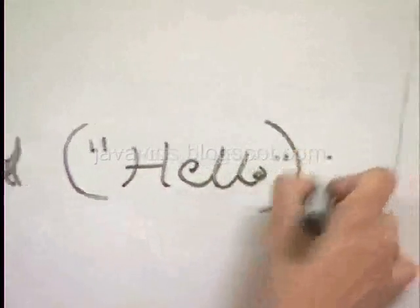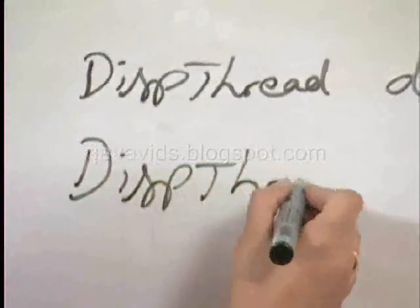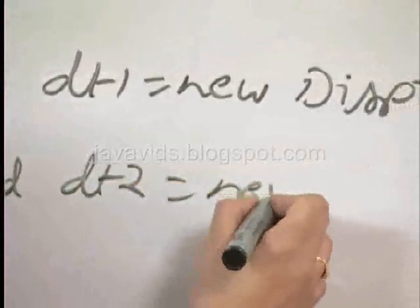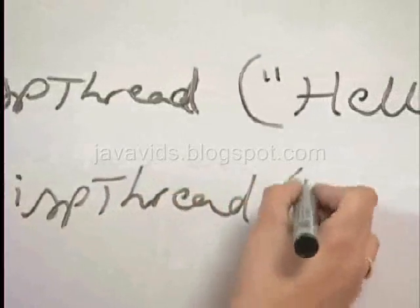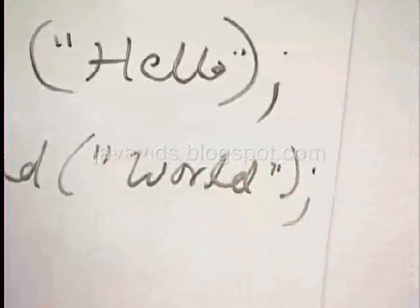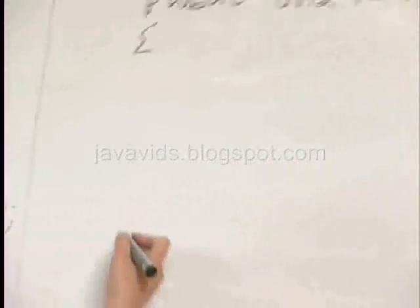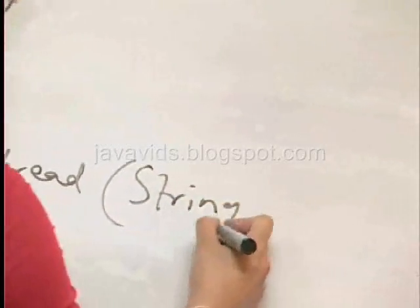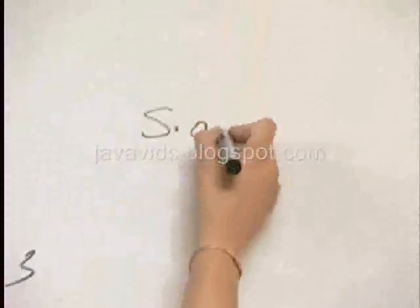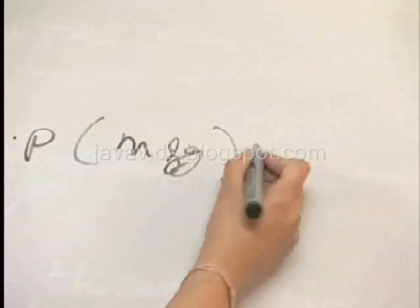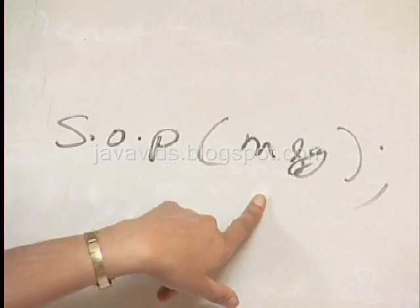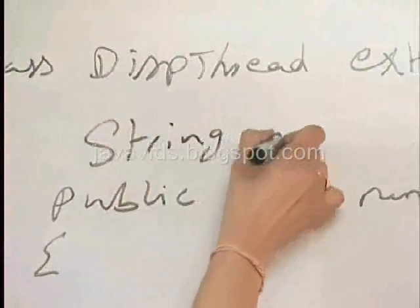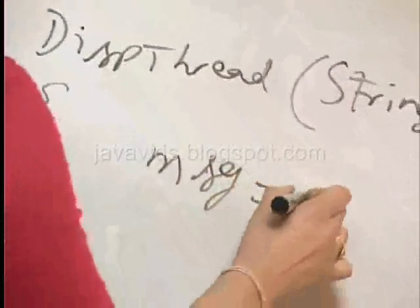Hello will be displayed by DispThread dt1. And similarly, we will create another DispThread object — dt2 is equal to new DispThread which takes 'world'. This means I need to have a constructor here which takes a string message, which I need to display. But how do I access this local parameter in the run method? Declare a variable in the class, equate it to the local variable value, and access the message in the run method.